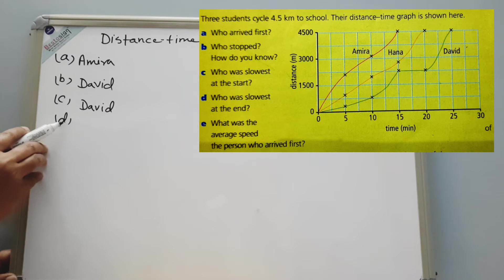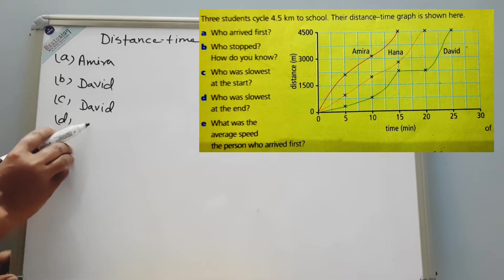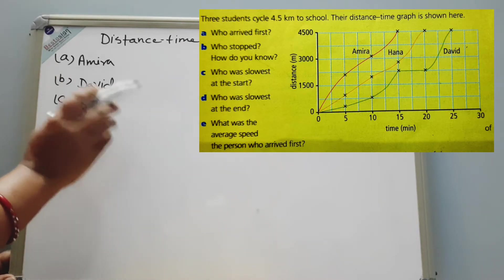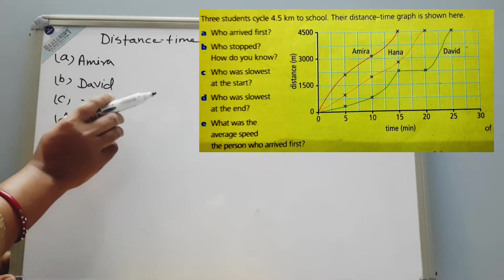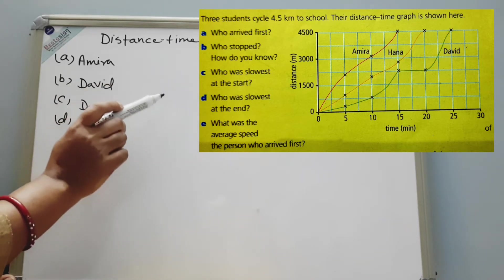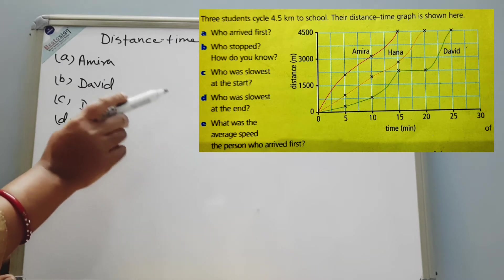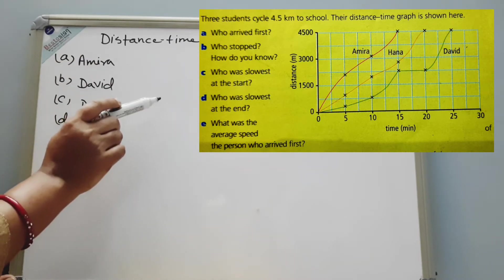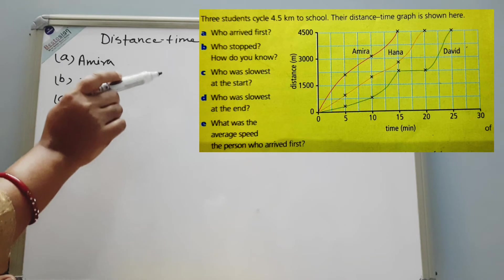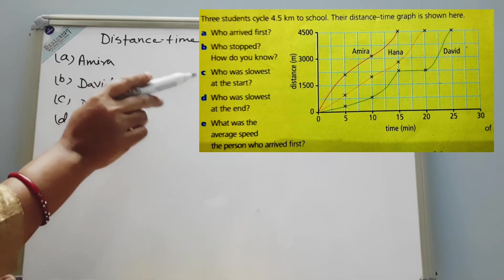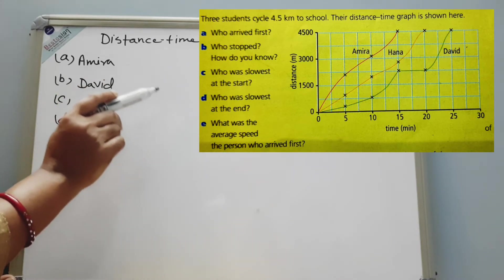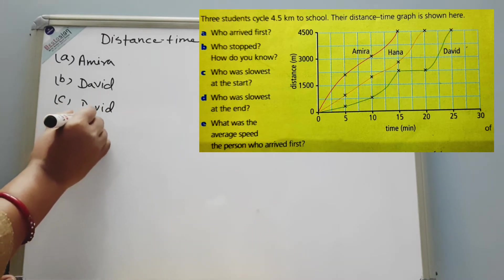Next, question D: who was slowest at the end? To answer this, we have to look at the graph carefully and see who covered the minimum distance in the given time. All three took five minutes at the last part of their journey, but Amira covered minimum distance — almost 1500 meters — whereas Hannah and David covered more than that. So Amira is the slowest at the end; answer D is Amira.